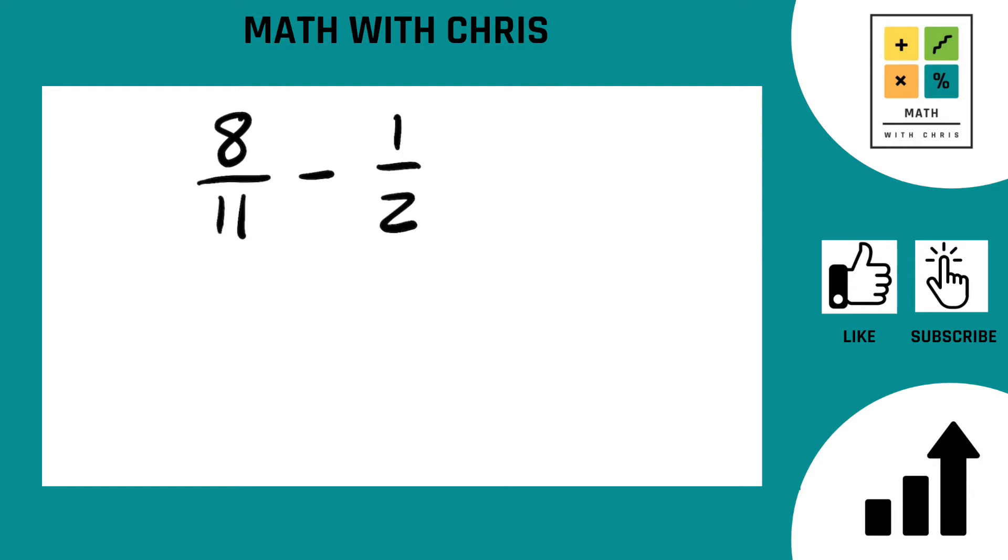The bottoms are different. The denominators are known as the bottom. So that means we're going to cross multiply this guy.